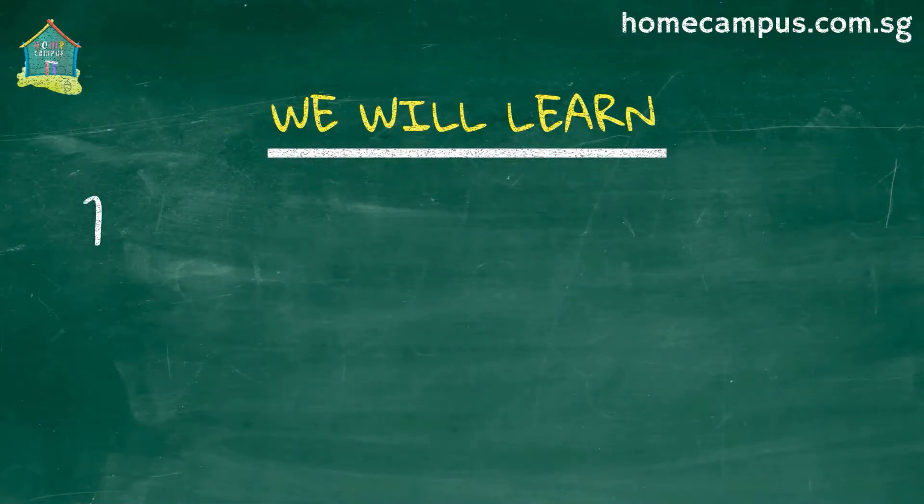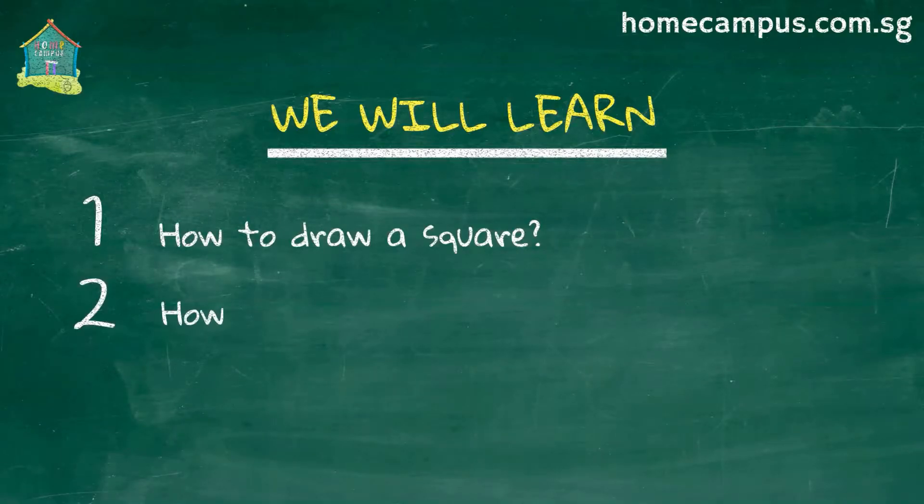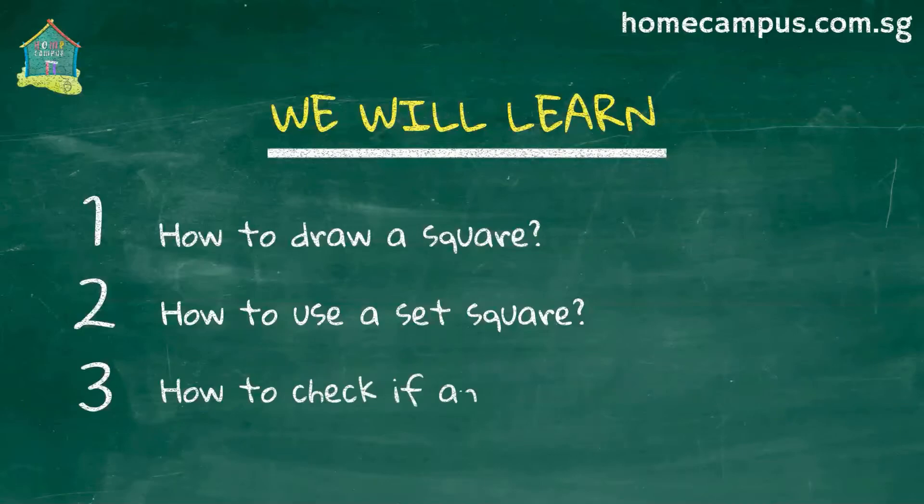In this tutorial we will learn how to draw a square using an instrument called a set square. Then using a protractor we will check if the angles of the square that we drew are right angles. You should have both these instruments in your geometry box.